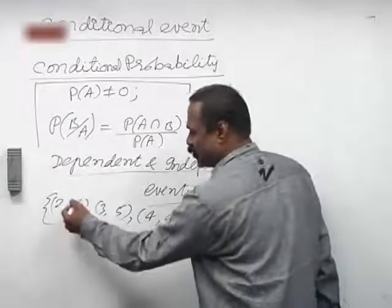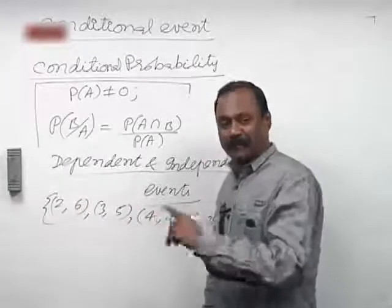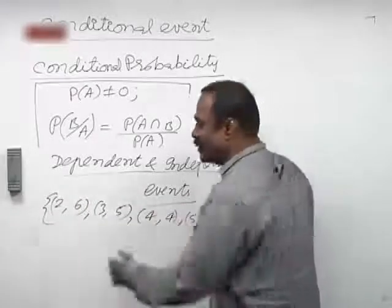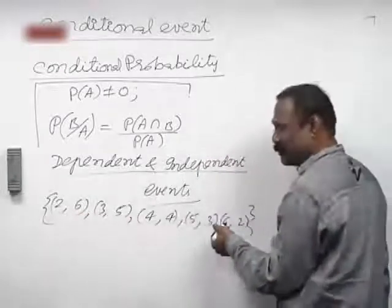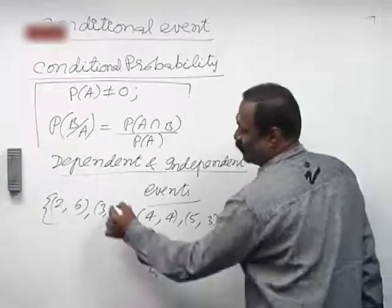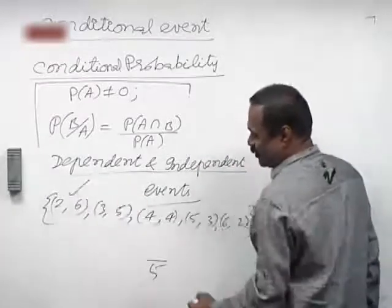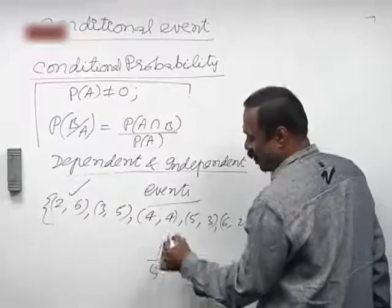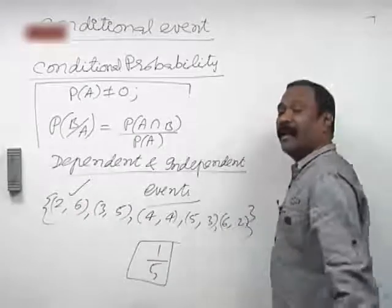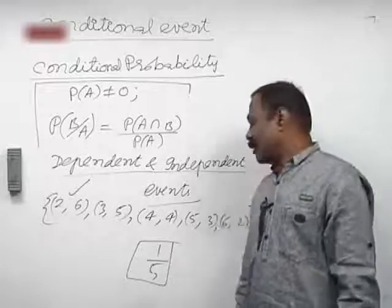Instead of 2,6 I had written 1,7. The total number of outcomes remains 5, and the favorable outcome is only 1, which is 2,6. So the required probability is 1 by 5.